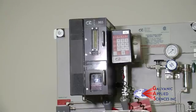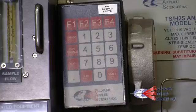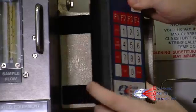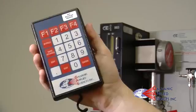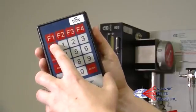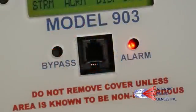Before doing any maintenance, take the handheld keypad for the 903 Analyzer. Press bypass to prevent any alarms from engaging. You will know bypass is activated when you see a flashing orange light below the display.